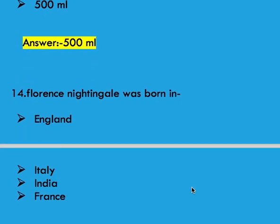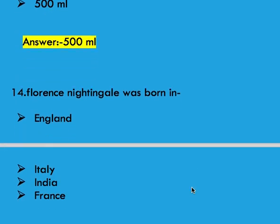Florence Nightingale was born in options: England, Italy, India, and France. Right answer is Italy.